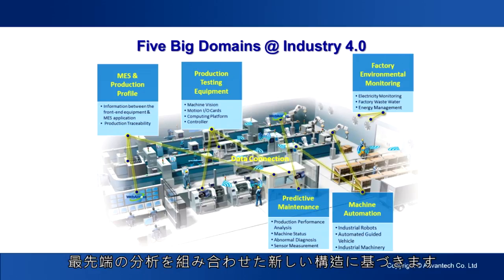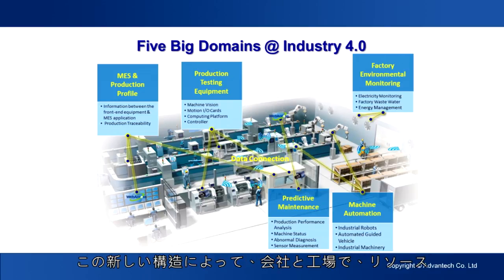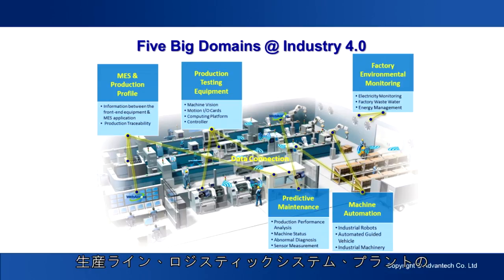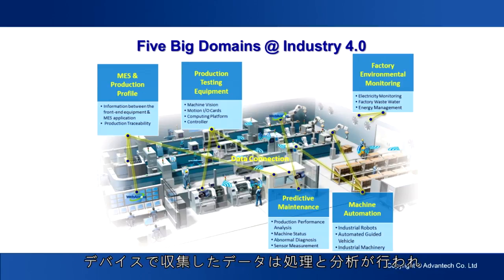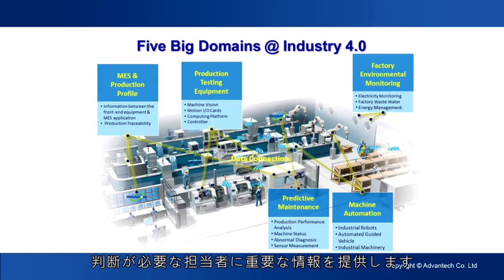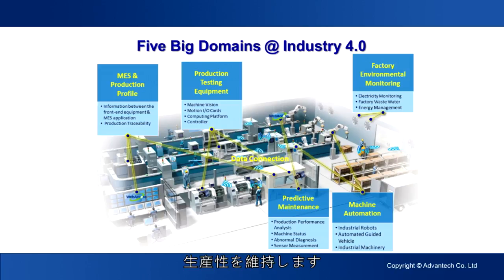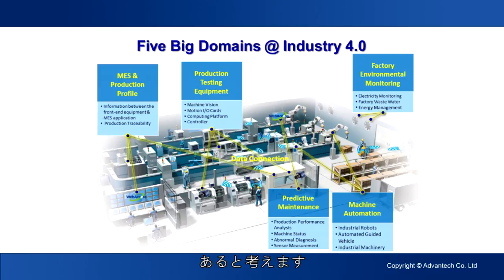Smart factory is based on a new structure that combines the benefits of process applications and advanced analytics to help businesses and factories manage their resources, processes, and systems more efficiently. Data collected by devices across the production lines, logistic systems, and plant sites are processed and analyzed to provide meaningful information to decision makers. Smart factory can also lower the effect of labor shortage and instability to keep productivity.